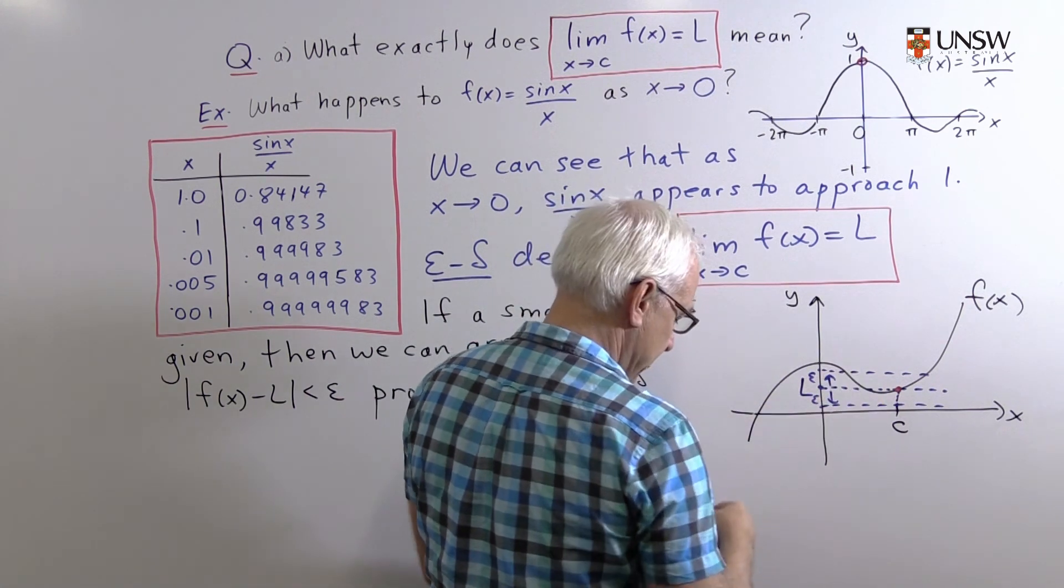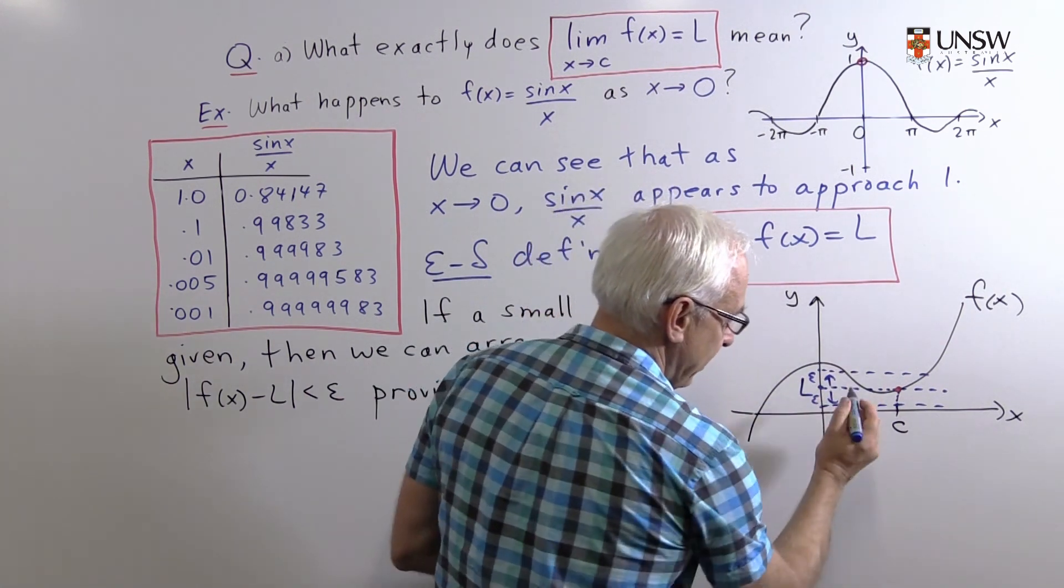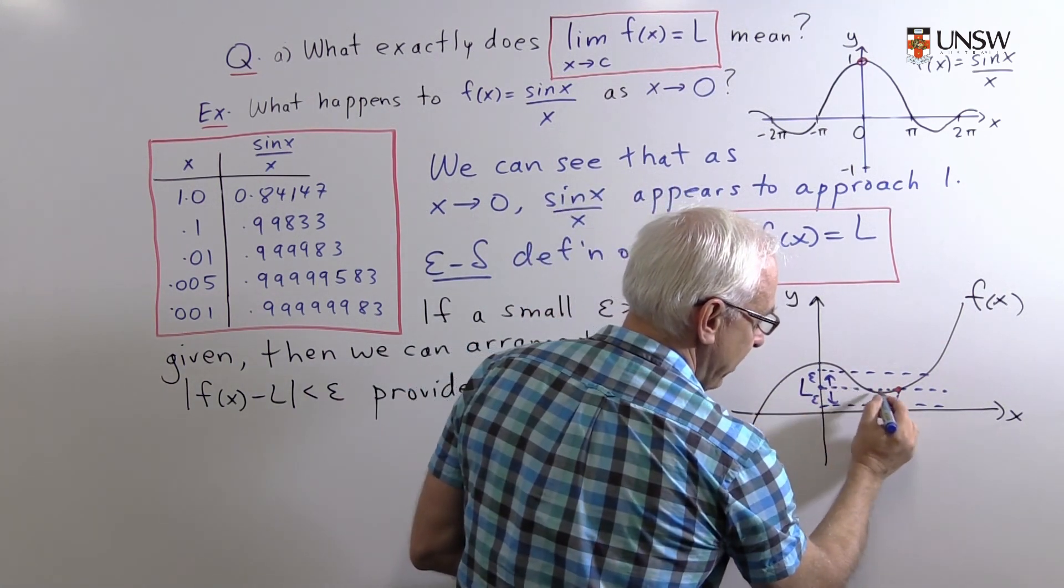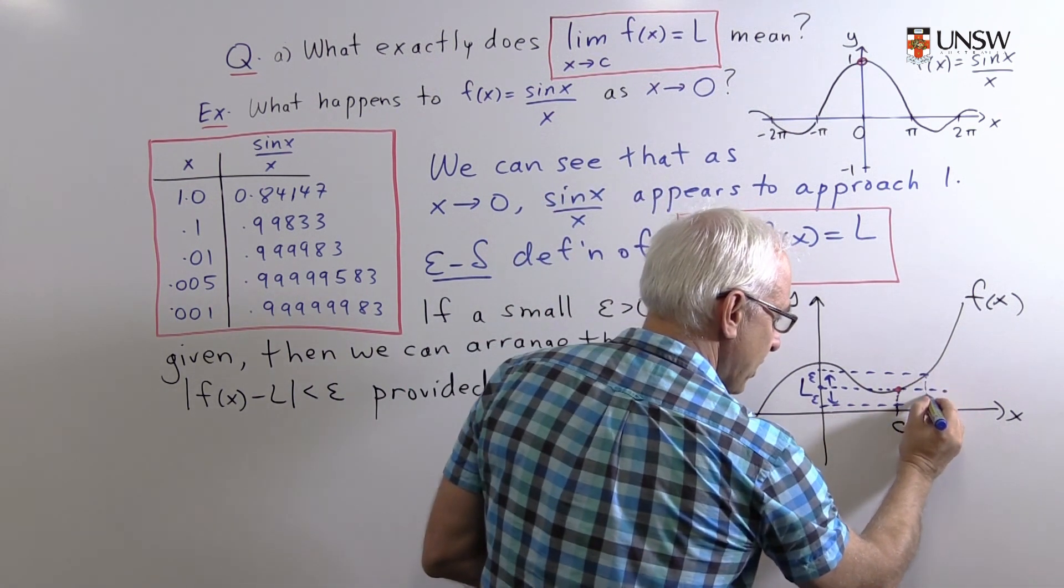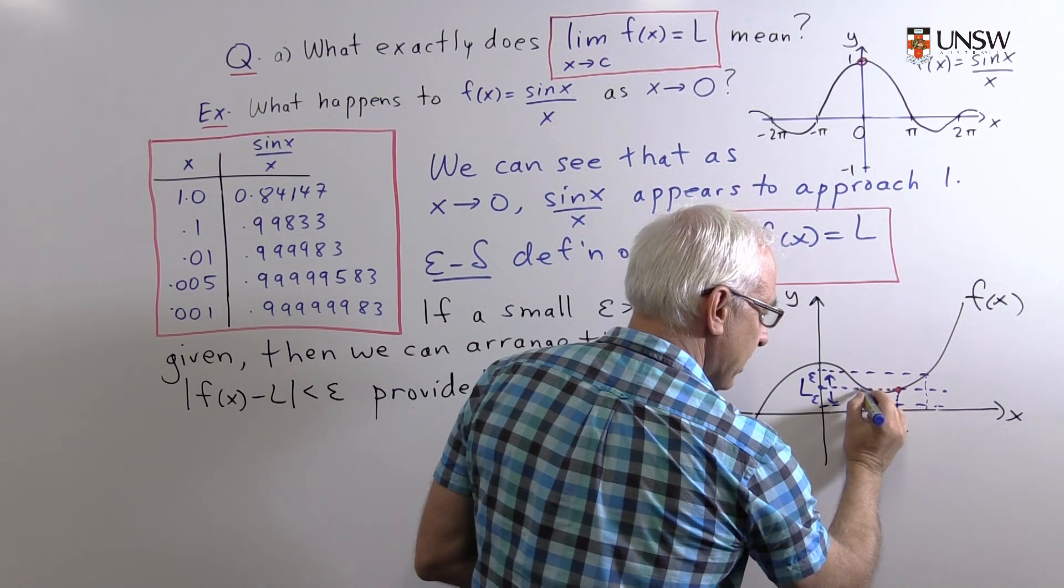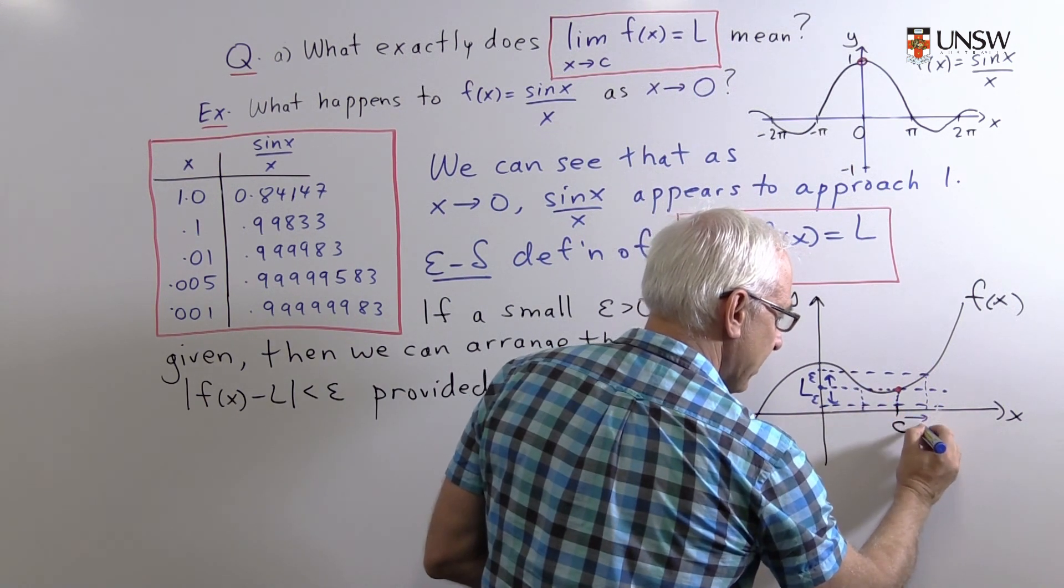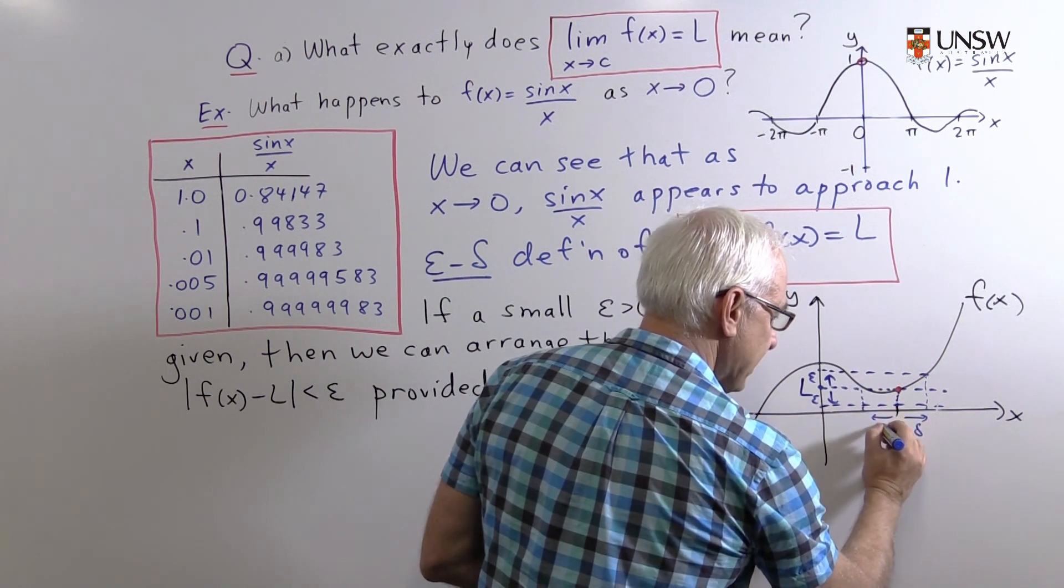Well that means we're looking at this part of the function from here to here. I think if we choose a delta which is about that size...